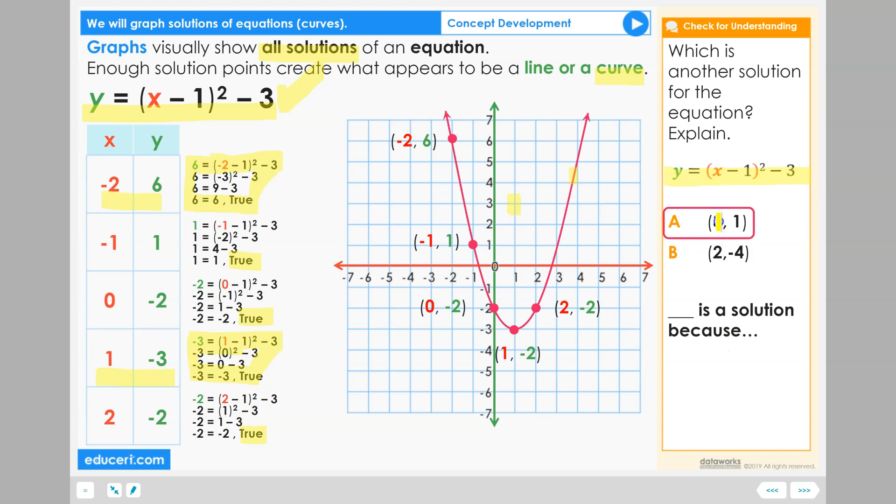A, positive 3, positive 1, which is located positive 3, positive 1 around here, is a solution because the point positive 3, positive 1 is on the graph.